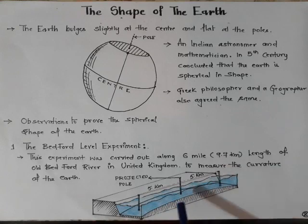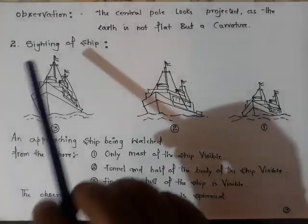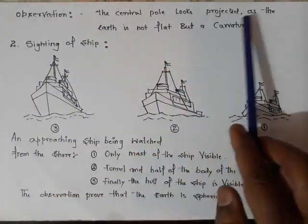So this happens only when the surface has a curvature. This also proves that the earth is not flat but spherical in shape. Observation: The center pole looks projected as the earth is not flat but has curvature.